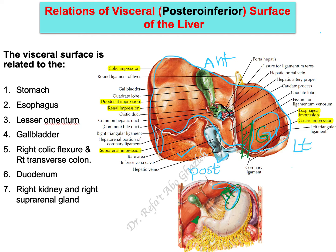Moving to the right: if you imagine the flipped liver released back down, it would cover these structures. We have the right colic flexure — also called the hepatic flexure because it is against the liver — and the transverse colon. The most anterior impression here is the colic impression, for the right colic flexure and transverse colon.